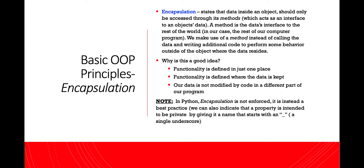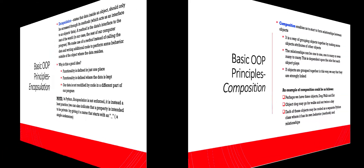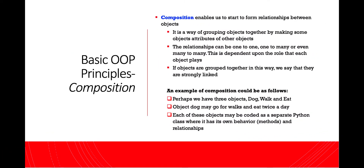Why is this a good idea? Functionality is defined in just one place — where the data is kept — and our data is not modified by code in a different part of our program. In Python, encapsulation is not enforced; it is instead a best practice or a convention. We can also indicate that a property is intended to be private by giving it a name that starts with a single underscore.